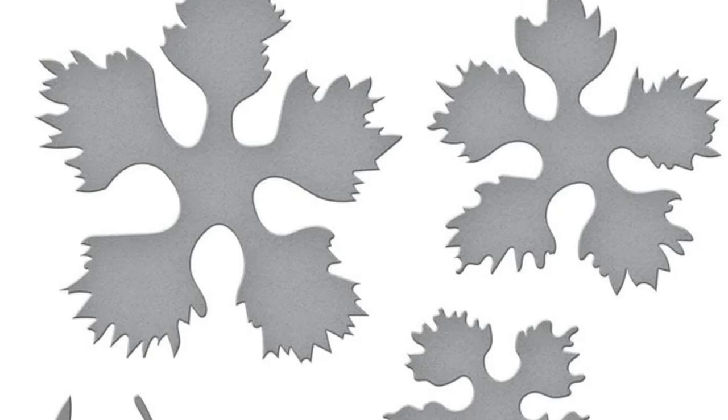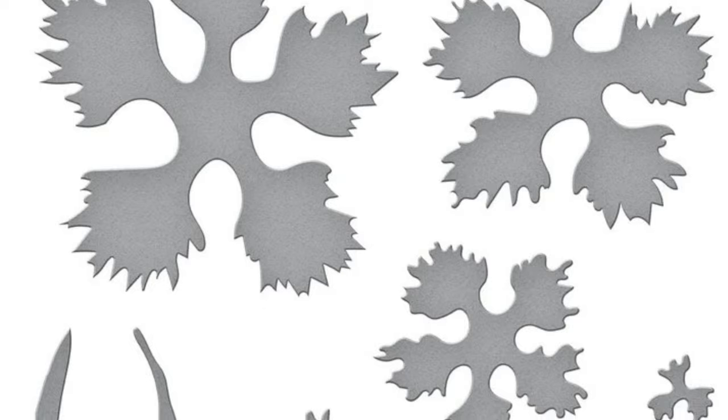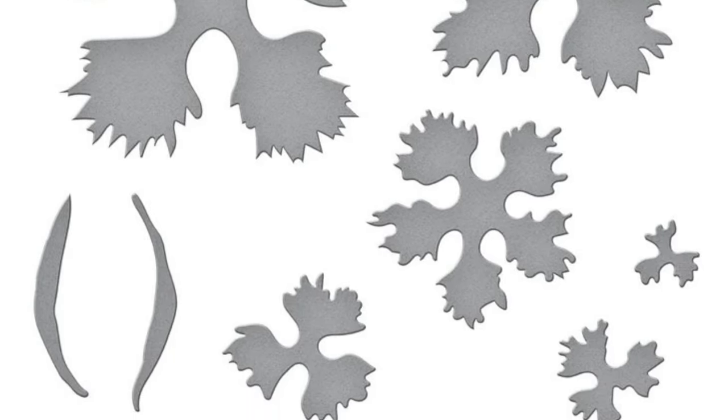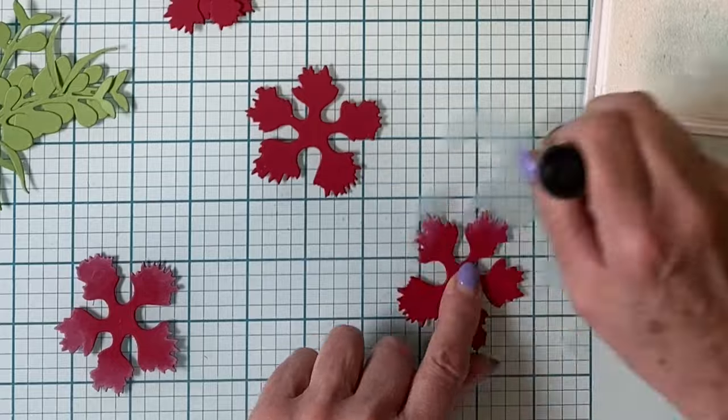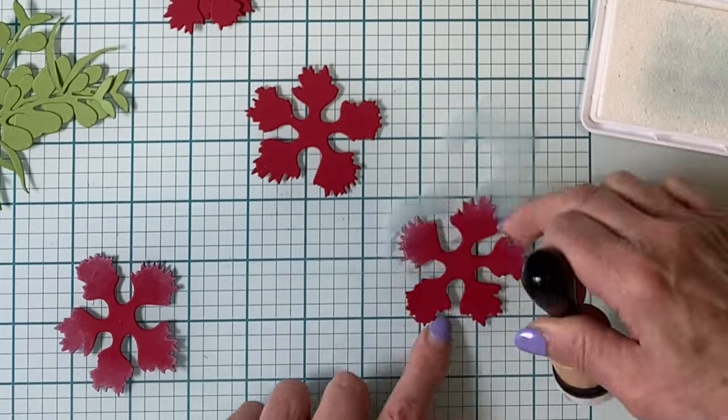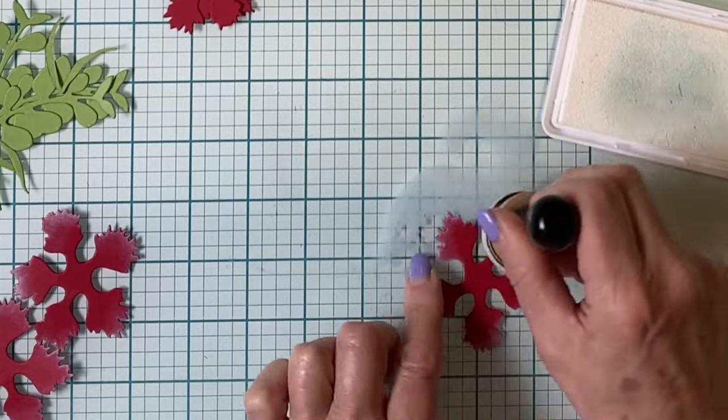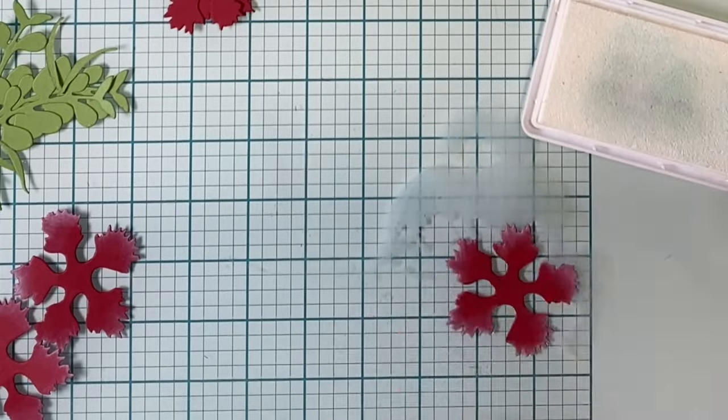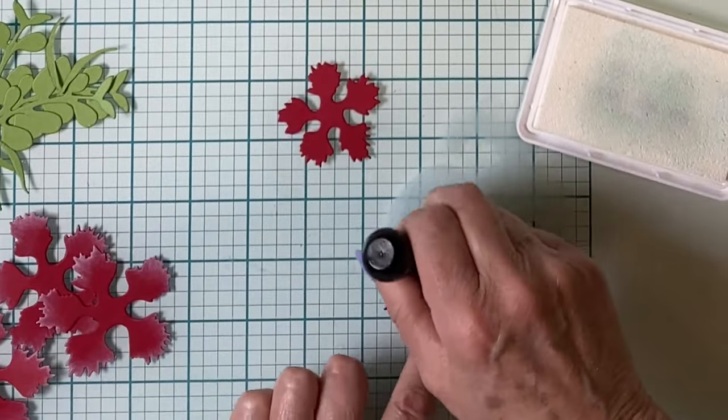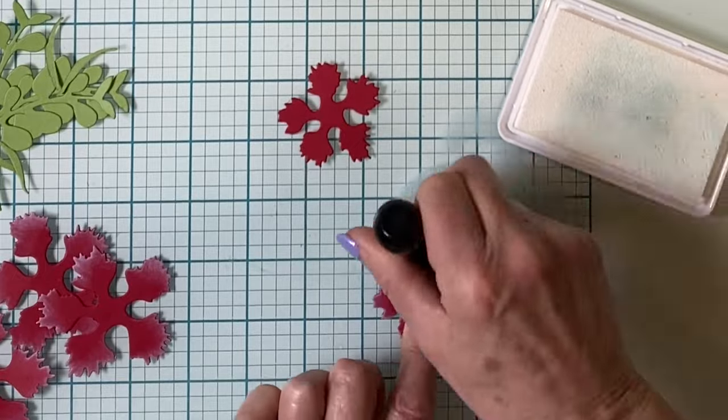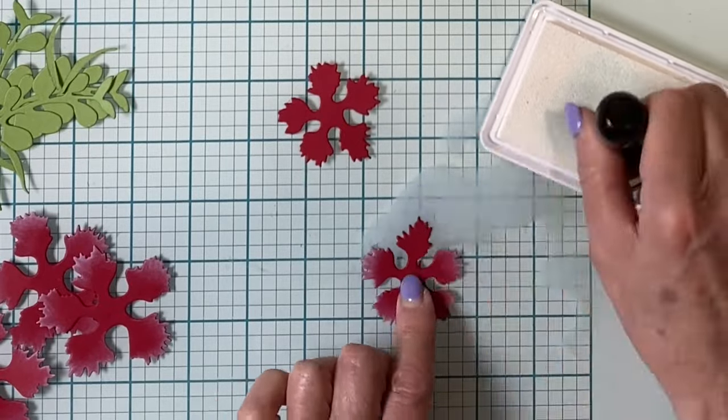The carnation die set consists of three dies. The largest petal base is a single and is cut three times. The other die has multiple petal layers of different sizes and is cut two times. The final die has two slender leaves. Again, the number of times it is die cut is etched directly on the die. I cut this one more times than suggested.